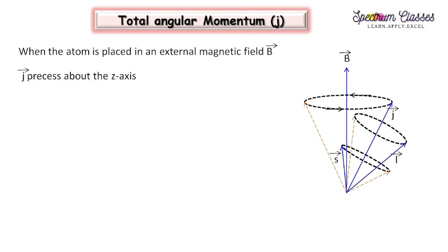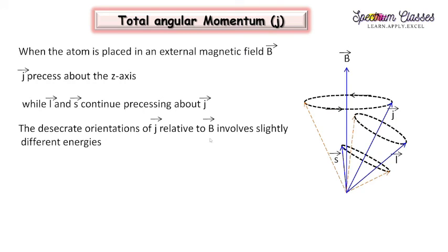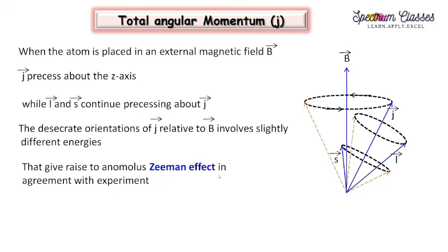So we can fully understand three important concepts: first, orbital angular momentum; second, spin angular momentum; and third, total angular momentum — and their behavior in an applied external magnetic field. I hope you understand the concepts discussed in these two videos. In the next video I am going to discuss spectroscopic term symbols. If you like this video, please subscribe to my channel and give a thumbs up. Thank you.